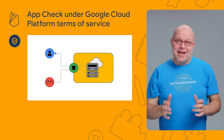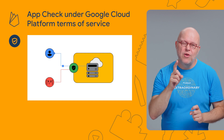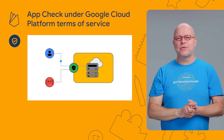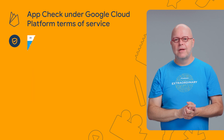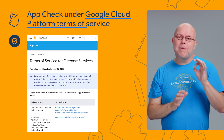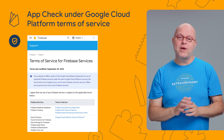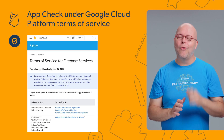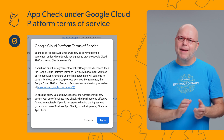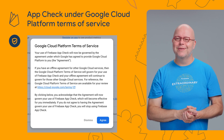Firebase AppCheck reduces abuse by checking that calls come from your genuine app on an untampered device before allowing access to your project's backend resources. Since September 25th, AppCheck is offered under the Google Cloud Platform Terms of Service, which removes a significant adoption friction for customers who already use Google Cloud. If you haven't seen a banner yet to accept the new Terms of Service, visit the Firebase console today to switch over.